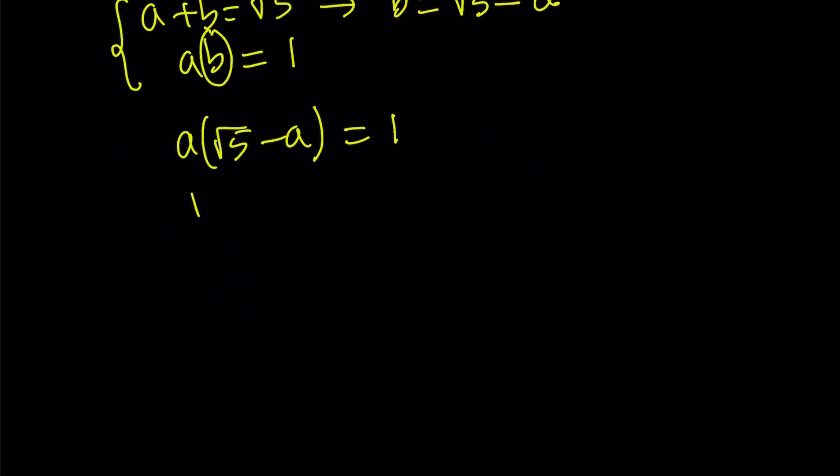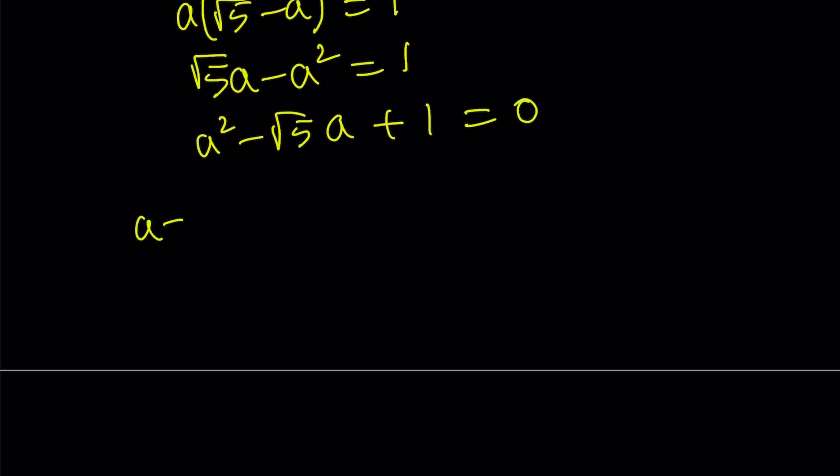What does that look like? √5a - a² = 1, or a² - √5a + 1 = 0. And this equation is very easy to solve with the quadratic formula. You can just go ahead and solve for a values.